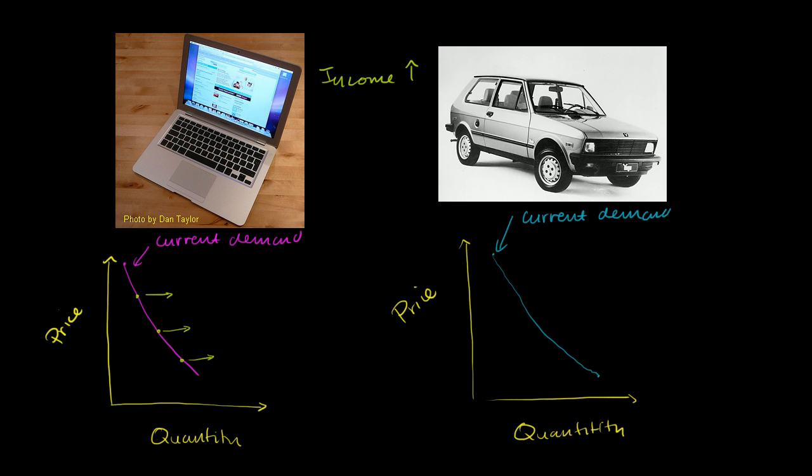And so if income goes up for this laptop, the demand will increase. And the way we show demand increasing is the whole curve shifts to the right. So this right over here, demand increased. Demand went up when income went up, and that makes complete sense. And if income were to go down, demand would go down because people would have less money to buy something like a laptop. And this is the case for most goods. And we call things like this, when income goes up demand goes up, the whole curve shifts to the right. Income goes down, demand goes down, the whole curve shifts to the left. We call this a normal good.